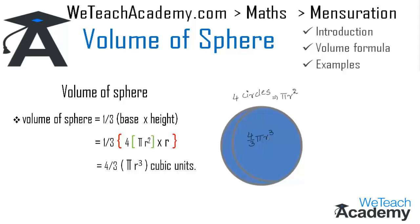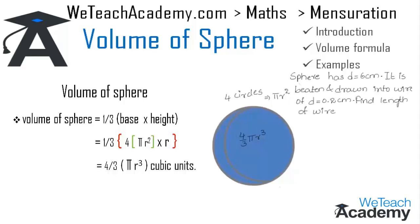Now coming to the examples. The first example: a sphere has a diameter of 6 centimeters and it is beaten and drawn into a wire of diameter 0.2 centimeters. Find the length of the wire. We are given the sphere's diameter as 6 centimeters, so the radius of the sphere equals half of the diameter — that is, 3 centimeters.